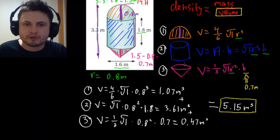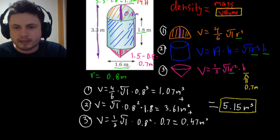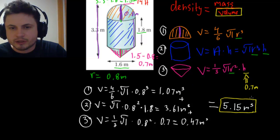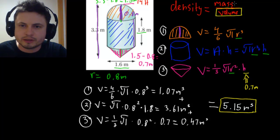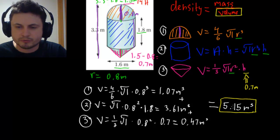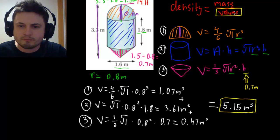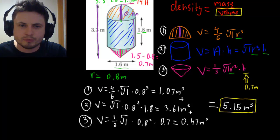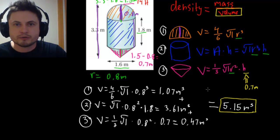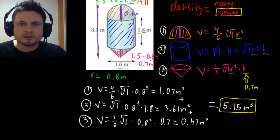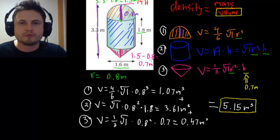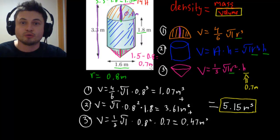The key approach is to break a complex shape down into recognizable pieces, find each volume separately, and add them up. If the problem also asks for density, take the given mass and divide by this volume to get kilograms per cubic meter. That covers volume and capacity for chapter 14 — a few more practice problems will follow, but this is the core content. Thanks for watching, please subscribe, and good luck!